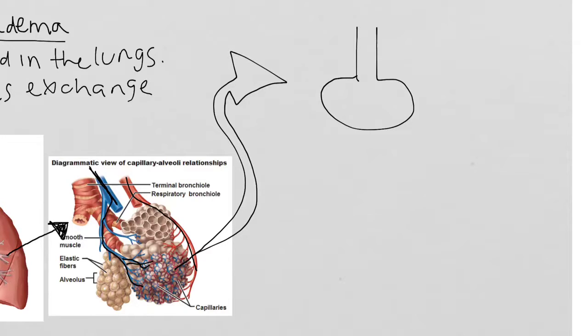This is the alveoli. This is the deoxygenated capillary right here, and the oxygenated capillary right here. Normally we have oxygen diffuse into the blood and we have CO2 diffuse out of the blood and then into the alveoli where we can breathe out the carbon dioxide. Right, this is the normal physiology of gas exchange.